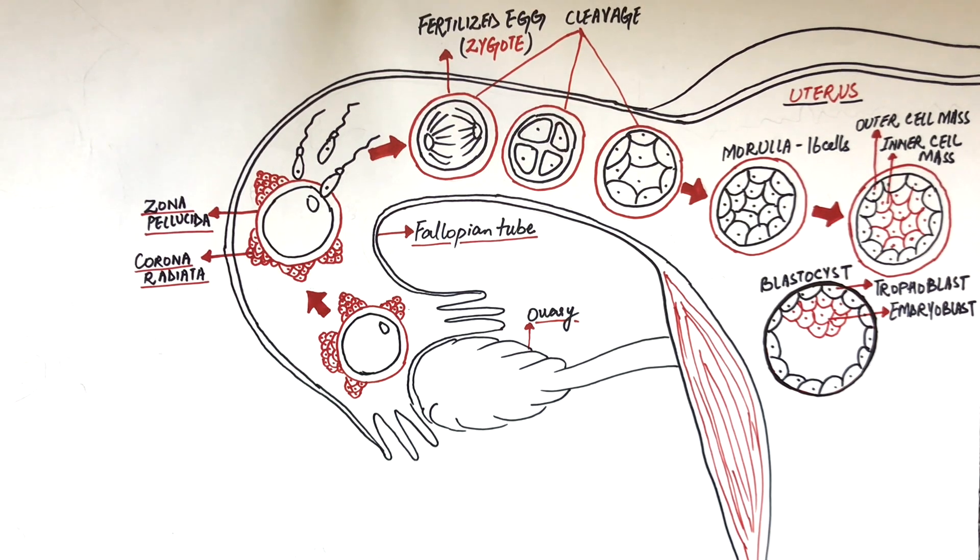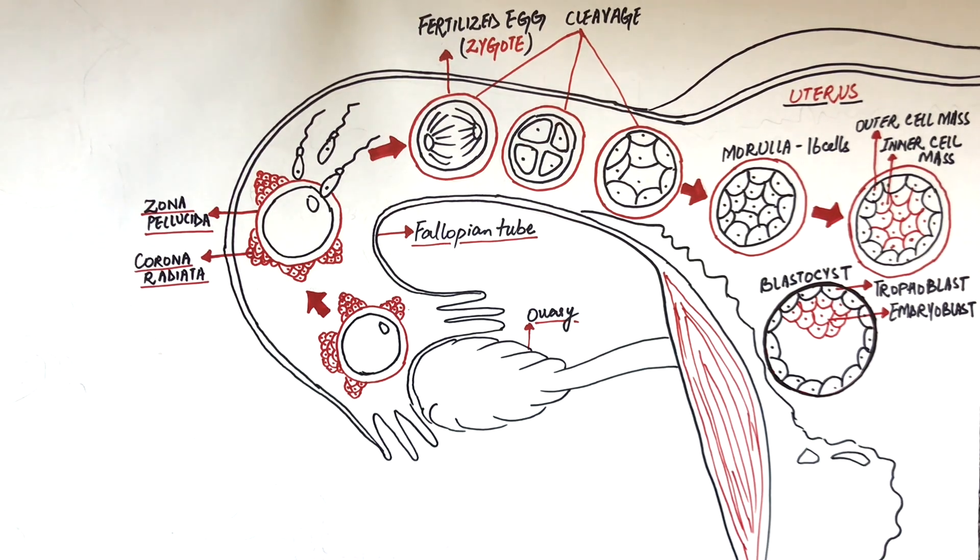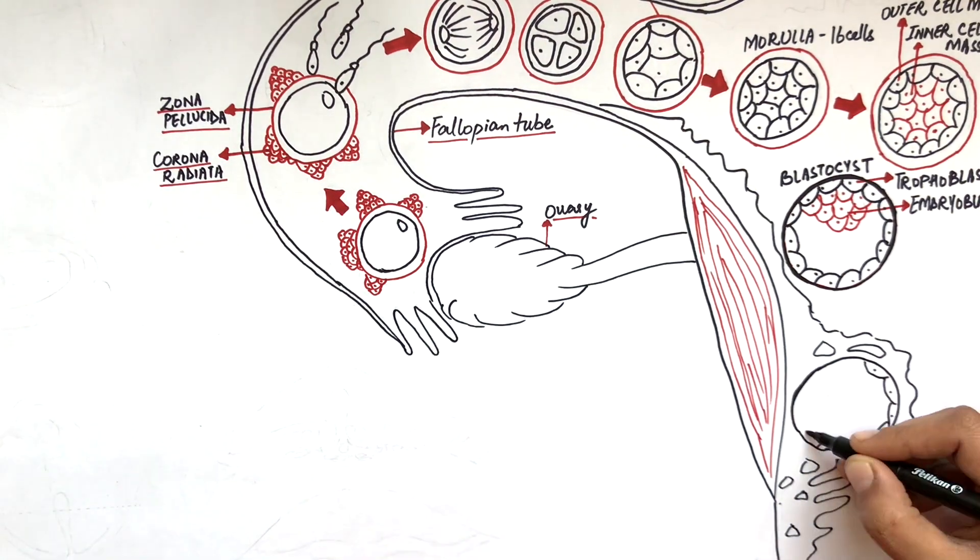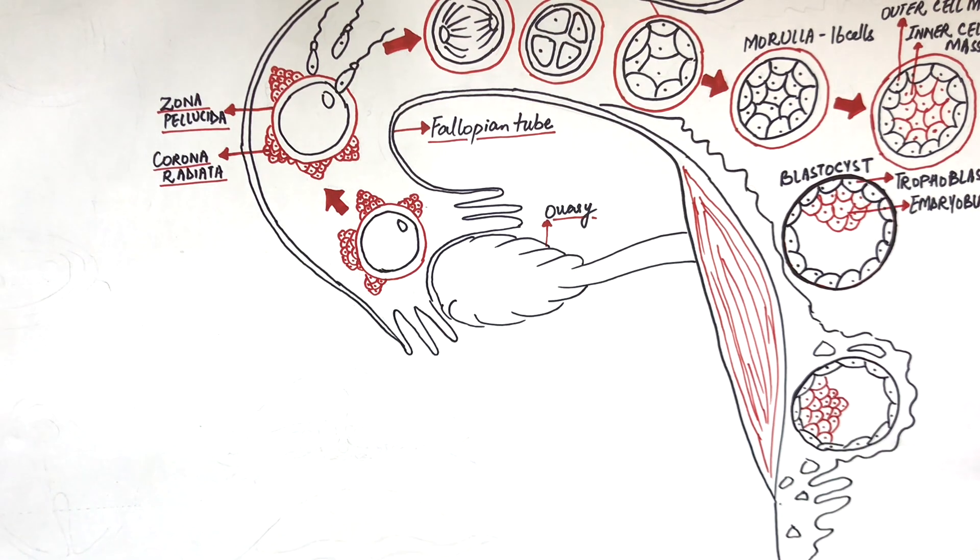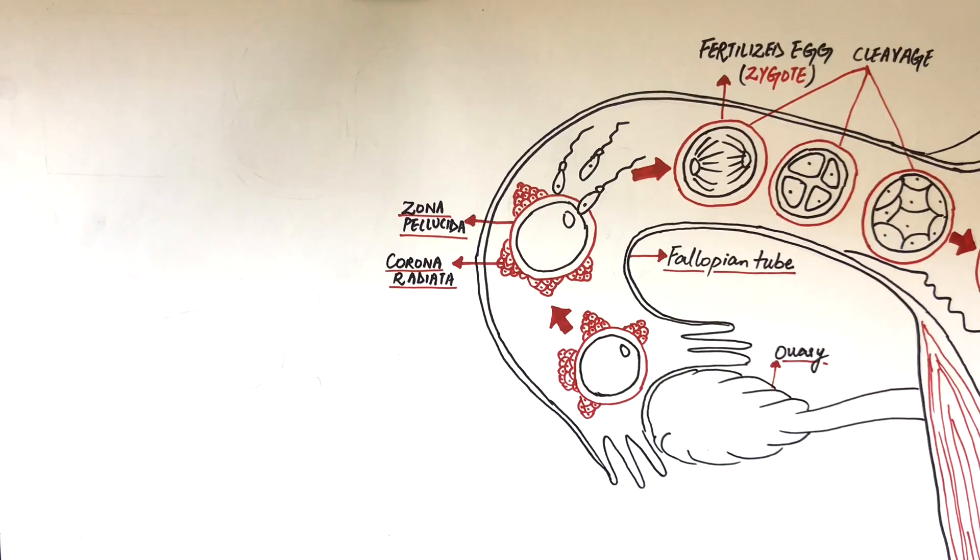The trophoblast will later convert into two layers of cells, but we will not get into detail of this. As it's a quick review, the focus of this video will be the embryoblast only. This blastocyst will implant at the uterine wall by the end of the first week after fertilization. This implanted blastocyst is now called the embryo.